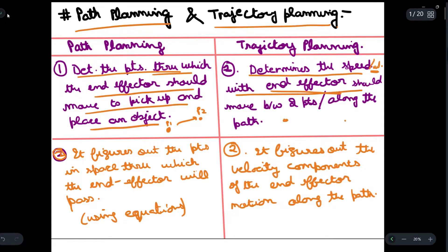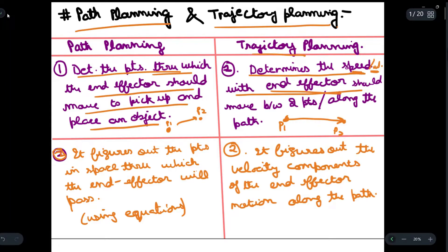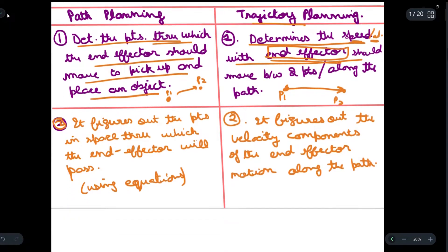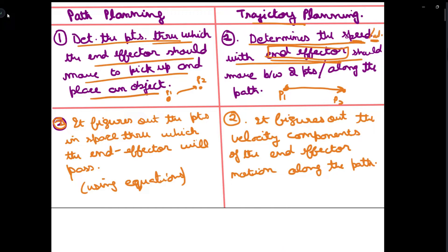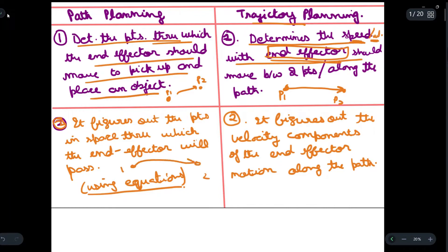Say we have two points p1 and p2 — the movement of the manipulator from one point to the other will be determined by trajectory planning, along with the speed and velocity of the end effector. In path planning, it figures out the space through which the end effector will pass using equations. For example, if we have two points, one and two, the path traced from this point to that point will be done by path planning.